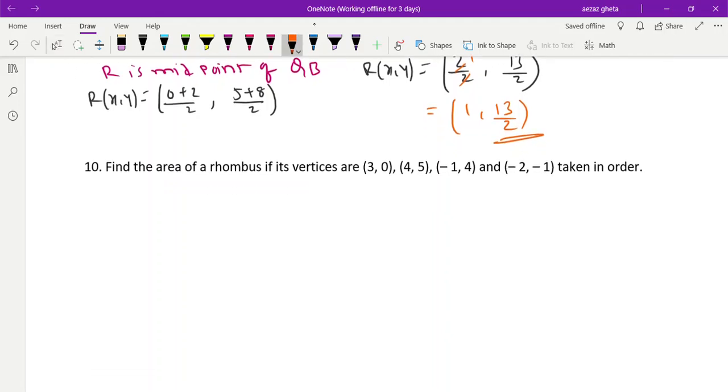Last question in this video. Find area of rhombus. This is your rhombus, think of it. Okay, A, B, C, and D. Now they have given (3, 0), (4, 5), (-1, 4), (-2, -1). So we should find area of rhombus.